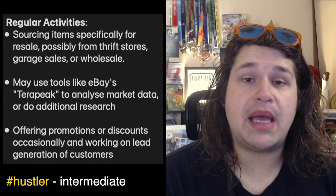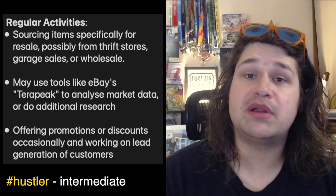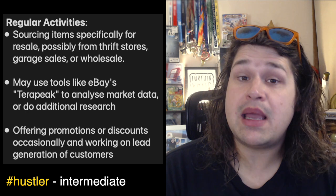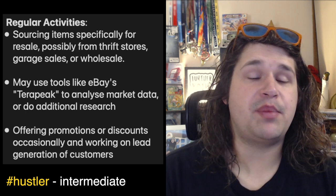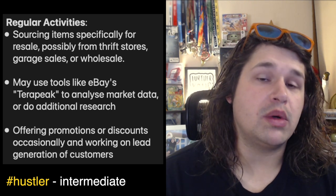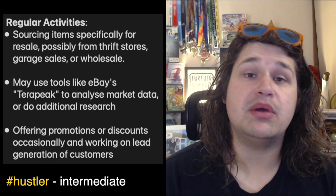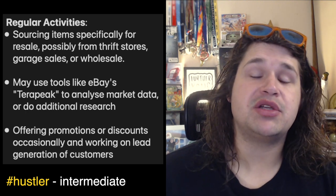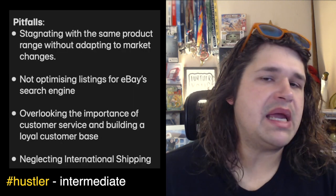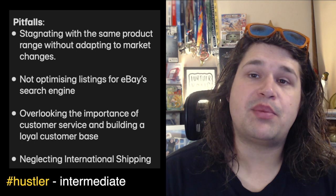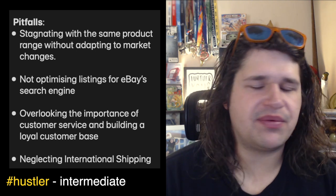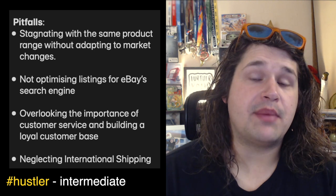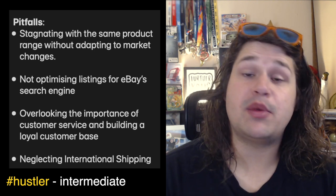Regular activities that an intermediate or hustler might be doing: sourcing items specifically to sell — now we're starting to get into the intent to resell, possibly from thrift stores, garage sales, and could even be wholesale. Potentially using tools like Terapeak to analyze market data to understand what's working, and going above and beyond doing additional research to understand what you should be selling. Also offering promotions and discounts and occasionally working on lead generation of new customers. Some areas of pitfalls could include getting stagnant with the product range and failing to adapt to different market changes — this might be seasonal, trend-related, or just not relevant at a certain point in time. It doesn't mean they're bad products; they might just not be ready to sell right now.